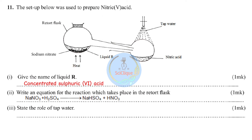Acidic salts contain a replaceable hydrogen atom — examples include sodium hydrogen carbonate, sodium hydrogen sulfate, potassium hydrogen phosphate. Normal salts do not contain a replaceable hydrogen atom — examples: sodium carbonate, potassium sulfate. Roman numeral three: the role of tap water is to condense the nitric acid fumes to liquid so that it can be collected.